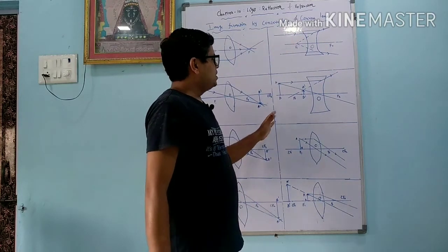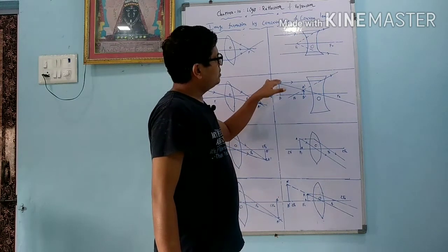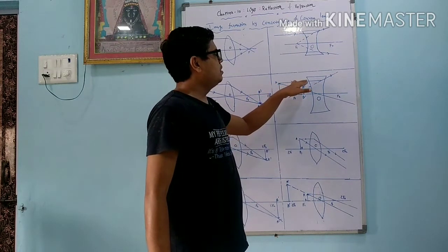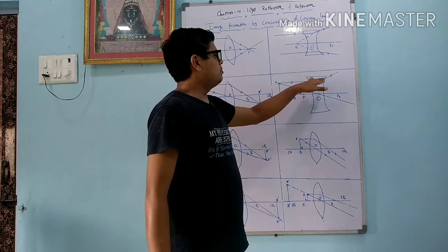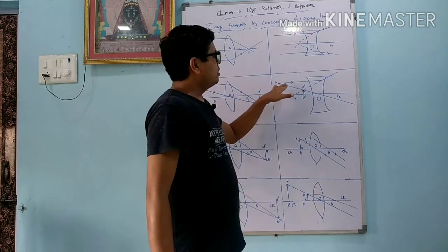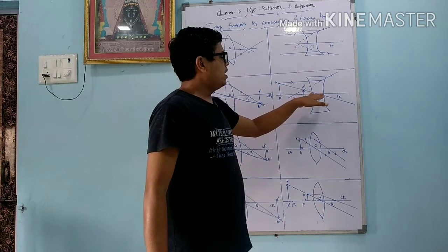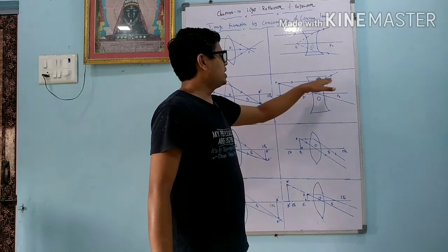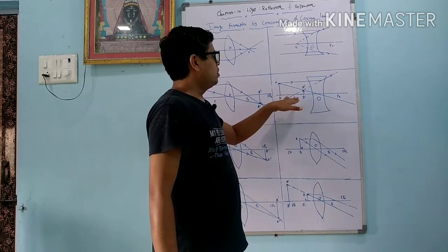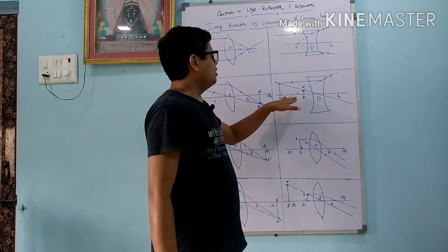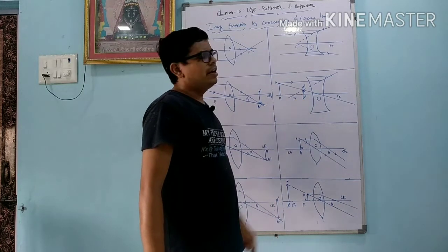When we put the object between the optical center and infinite distance, two rays are passed. One ray is going parallel to the principal axis; it goes in a different direction after refraction because it is a divergent ray. Another ray passes from the optical center of the concave lens and will also go in a different direction. By extending, we get the image on the same side of the lens, between f1 and O. It is virtual and erect and it is diminished.